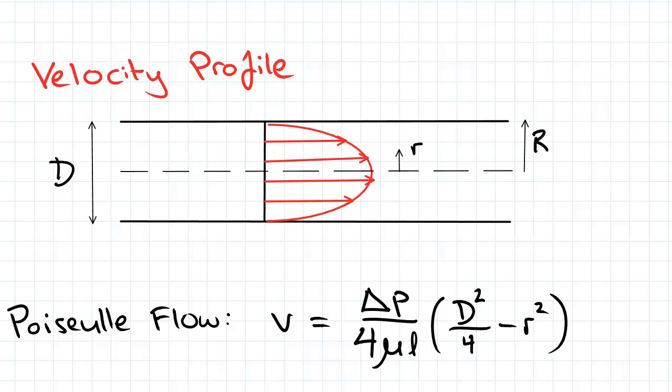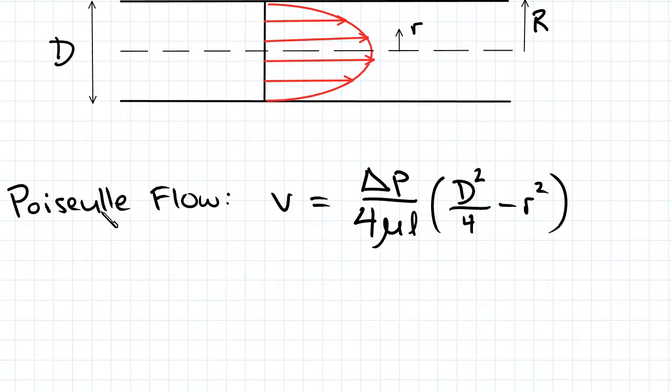Now the equation of the parabolic velocity profile here is described as, and I'm not sure if I'm saying it right, but Poiseuille flow, and that's given by this equation here. When r is equal to zero, the velocity is at a maximum.